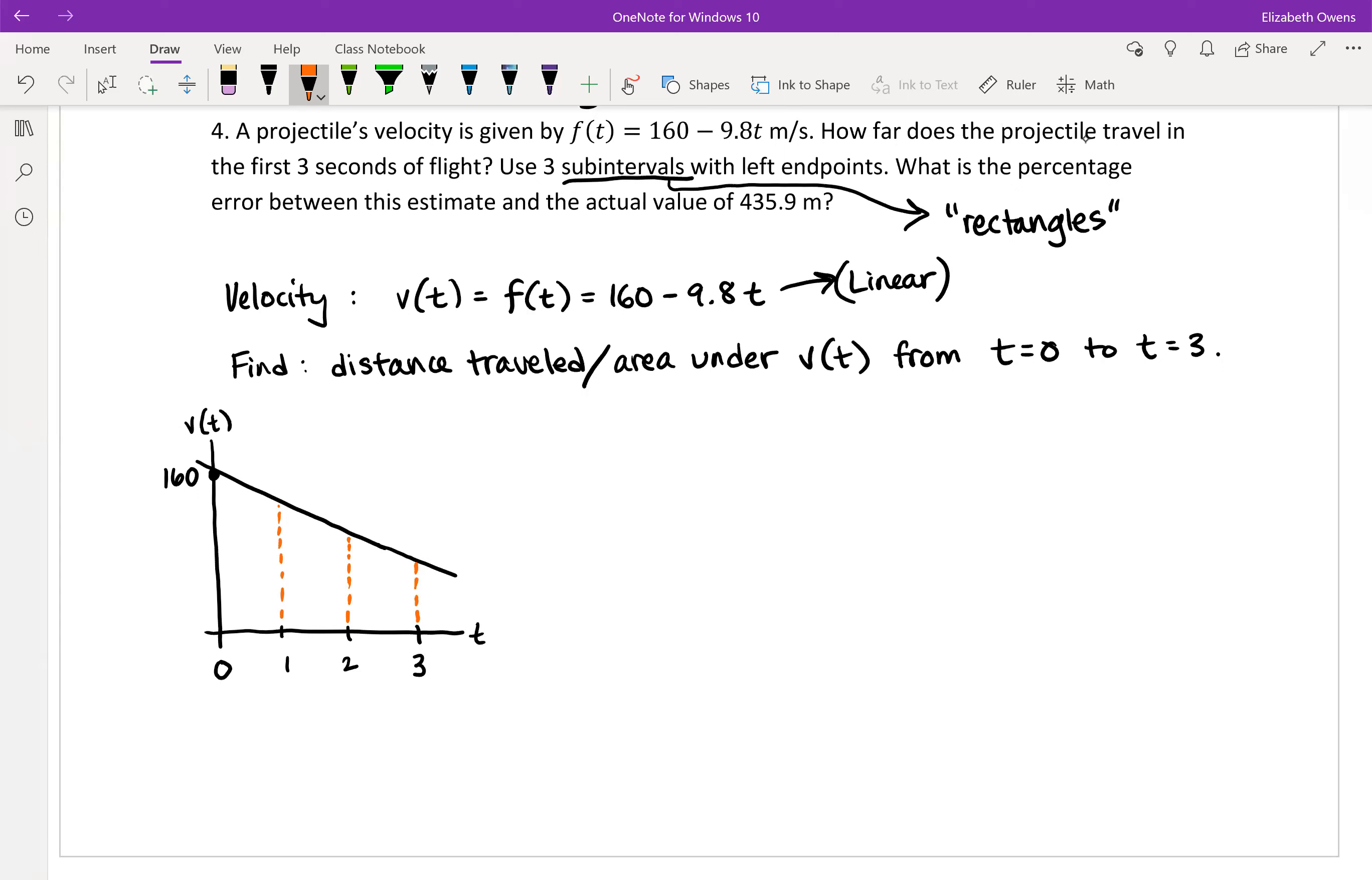And we want to use left endpoints. So for our first rectangle, for example, here, left endpoint, right endpoint, choose to work with that left endpoint to set the height. Okay. So you go up to f of zero. And that sets the height for the first rectangle.